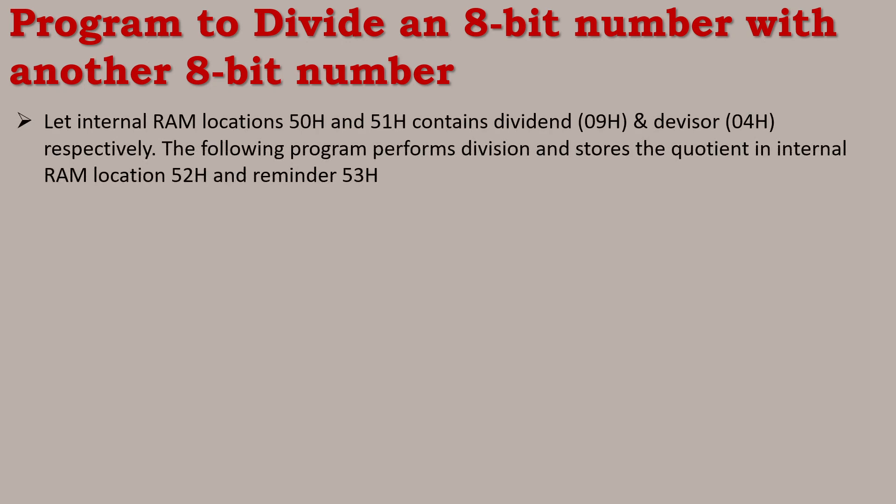We will start with RAM locations 50H and 51H. The value at location 50H is 09H, and the value at 51H is 04H. That means we will perform 9 divided by 4, where 4 is the divisor.